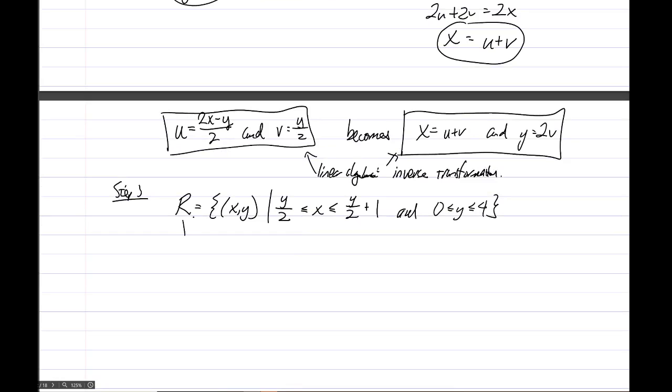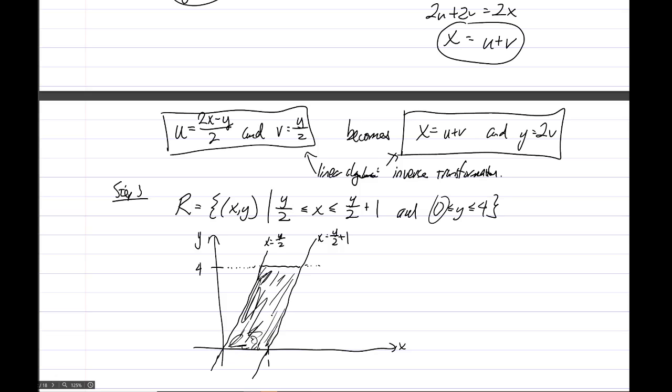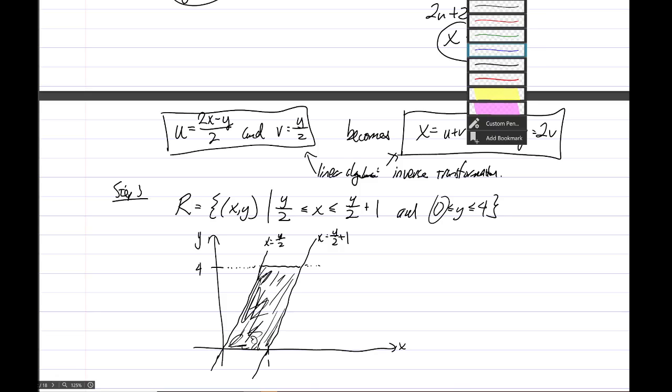So this R is a certain part of the XY plane, and what is it? So there's X, there's Y, and if we graph, let's see, X equals Y over 2. In other words, we graph Y equals 2X. It looks like that. So this line here, let's say, is X equals Y over 2. And then 1 unit over, this is X equals Y over 2 plus 1. So X is between this lower value and this upper value, and then Y is between 0 and 4.